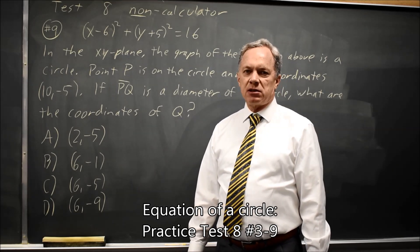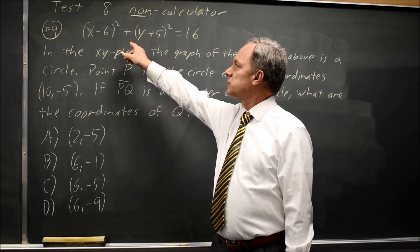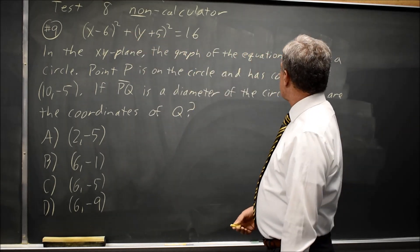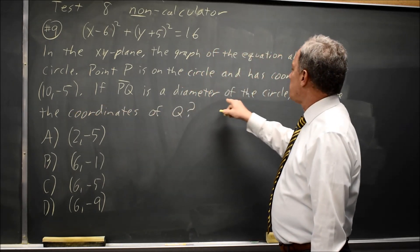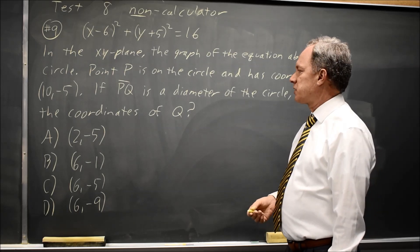This is SAT Practice Test 8 Non-Calculator. As they often do, College Board is asking about the equation of a circle. They give you the equation of a circle and say that point P is on a circle with coordinates (10, -5). PQ is a diameter of the circle. What are the coordinates of point Q, the other end of that diameter?